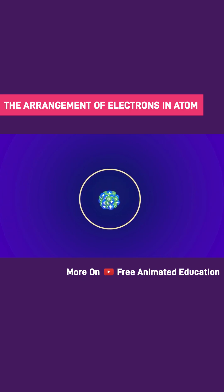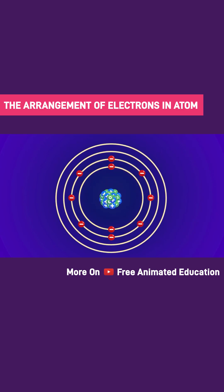The first shell, the closest to the nucleus, has the lowest energy level, so it's always filled first. The first shell can hold at most two electrons. At the next energy level, the second shell can hold a maximum of eight electrons. The third and fourth shells can hold eight and two electrons respectively.